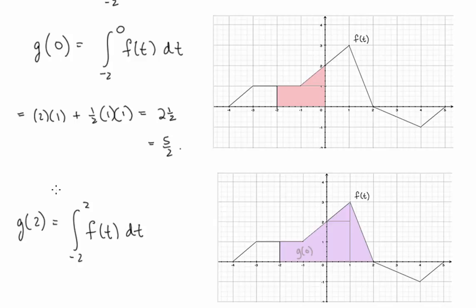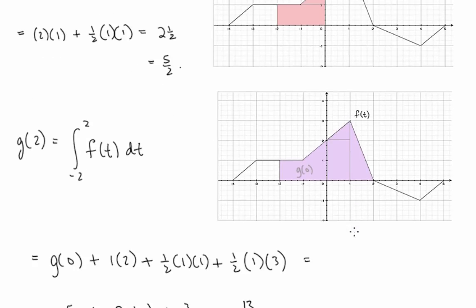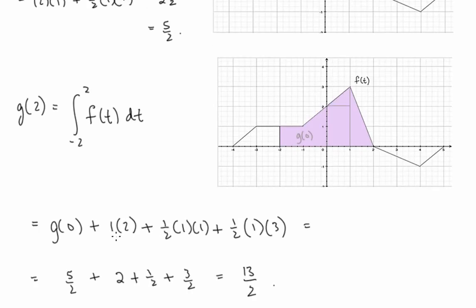g(2) is the integral from negative 2 to 2 of f(t) — that's all of this area. We already computed the area on the left, which was g(0). So we add that to the area of the rectangle plus the two triangles. That gives us 13/2.